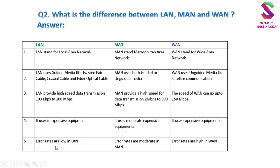पाँचवाँ difference — Error Rates: Error rates are low in LAN — LAN में data transmission speed अच्छी होती है और data बीच में टूटता नहीं। Error rates in MAN are average — मध्यम होते हैं।